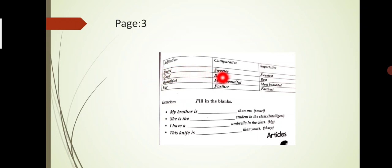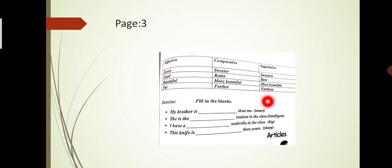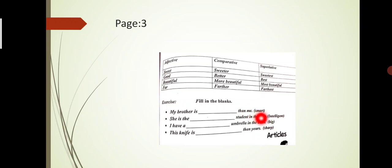Now come to the third page. Here on the worksheet the examples are: sweet — sweeter — sweetest; good — better — best; beautiful — more beautiful — most beautiful; far — farther — farthest. Now fill in these blanks. The adjective is given in brackets and you have to put the comparative or superlative form. If you see 'than' in the sentence, use the comparative form. If you see 'the' before the blank, use the superlative form.